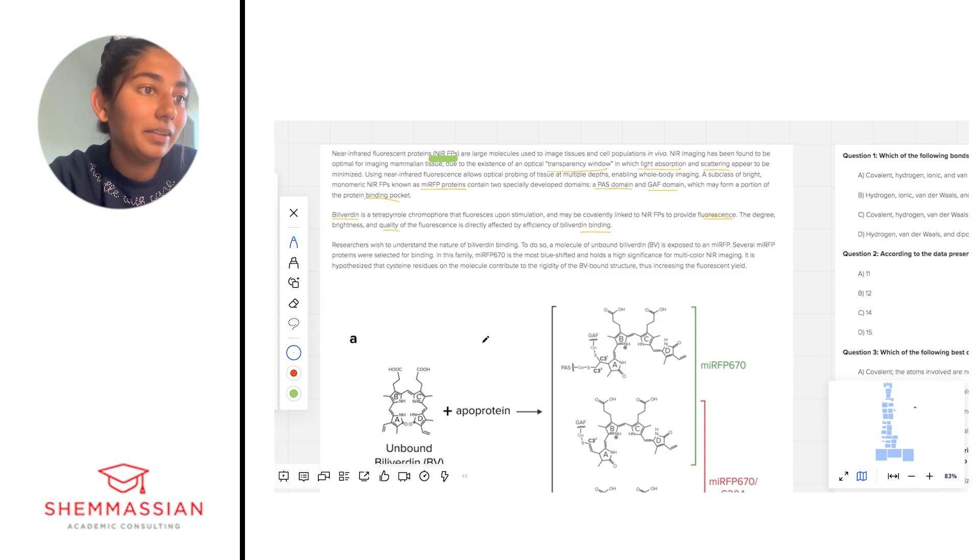Researchers wish to understand the nature of biliverdin binding. To do so, a molecule of unbound BV is exposed to several MIRFP proteins. In this family, MIRFP 670 is the most blue shifted and holds a high significance for multi-color NIR imaging. Blue shifted means it probably has something to do with its absorption or transmittance of light at the blue wavelengths.